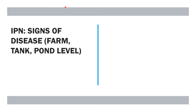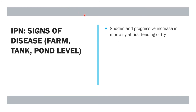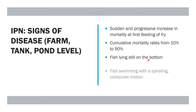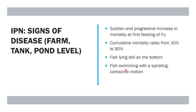The signs described in IPN in salmon include a sudden and progressive increase in mortality at first feeding of the fry, mortality rates ranging from 10% to 90%, fish lying still on the bottom, and fish swimming with a spiraling corkscrew motion.